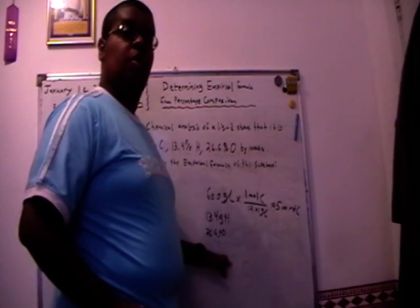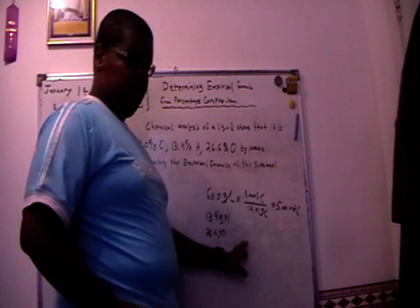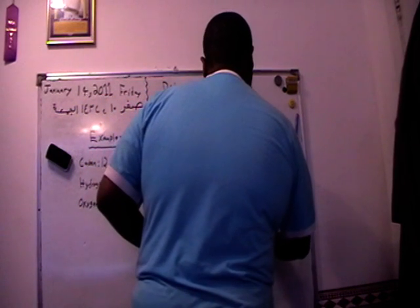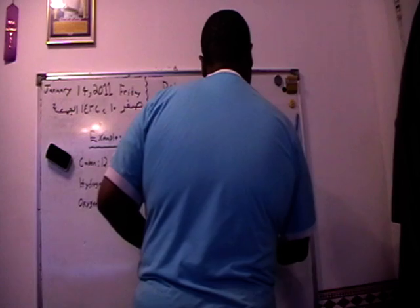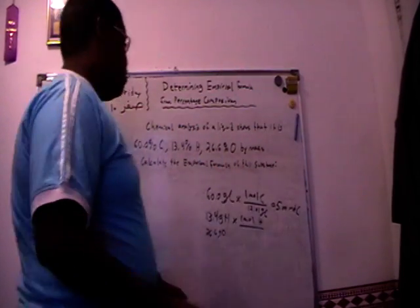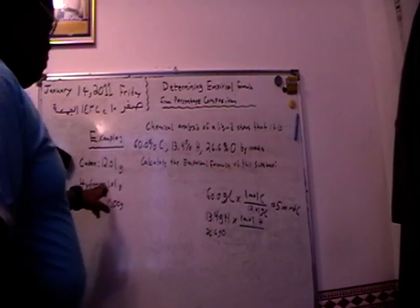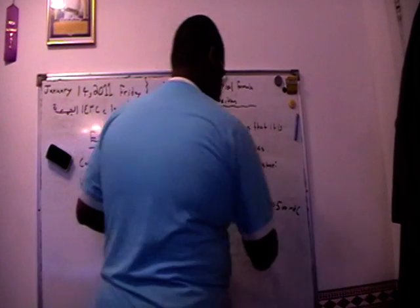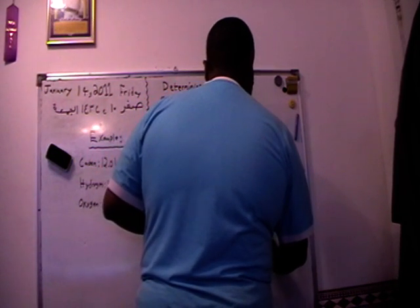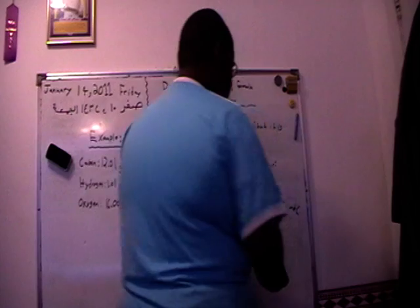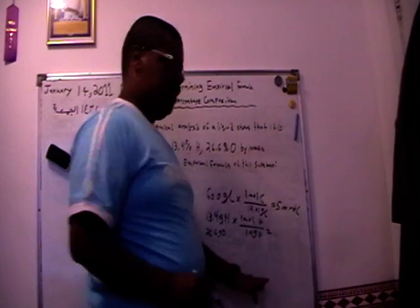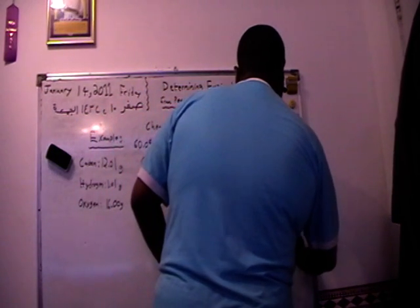Now 13.4 grams of hydrogen times 1 mole of hydrogen over the average atomic mass of hydrogen from the periodic table, which is 1.01 grams. So that will be equal to 13.3 mole of hydrogen.